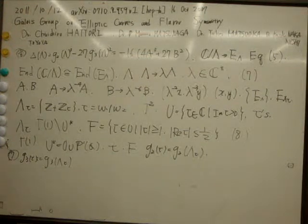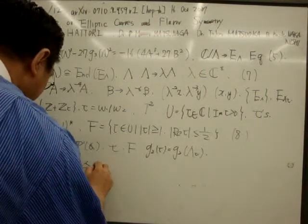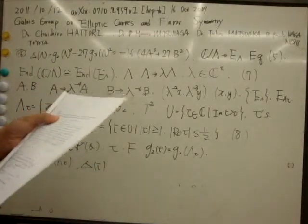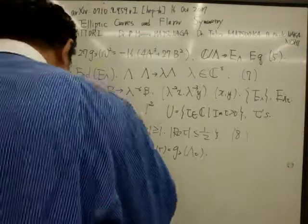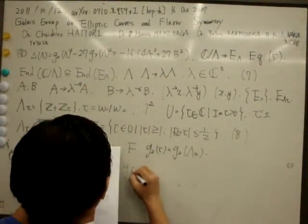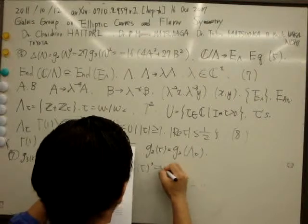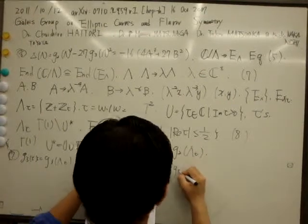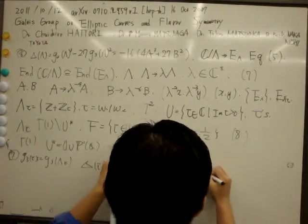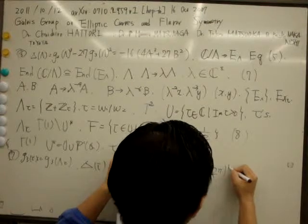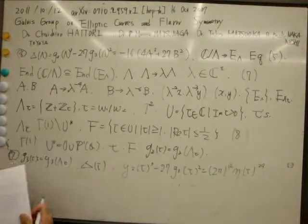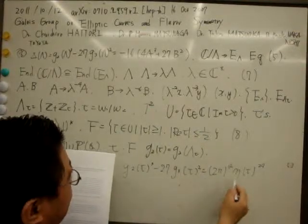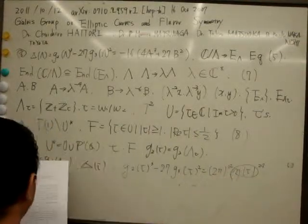The modular discriminant lambda tau is capsule form of weight 12 and expressed as G2 tau cubed minus G3 tau squared equals tau squared. Phi 2D and tau 4. Defense and measure for 3, 2.